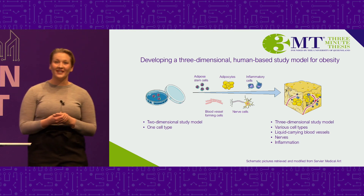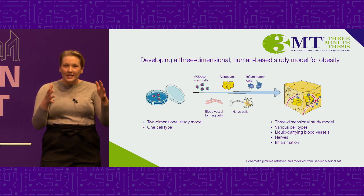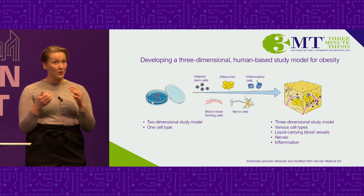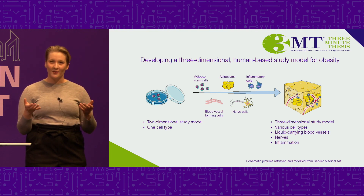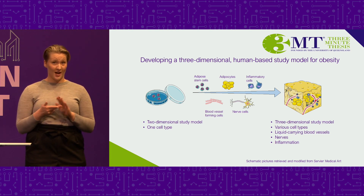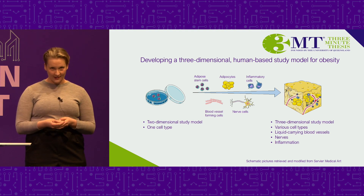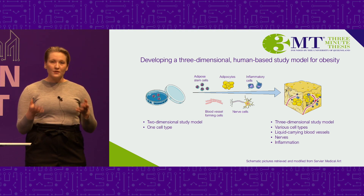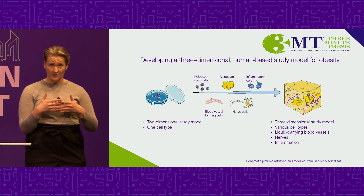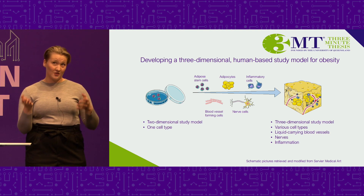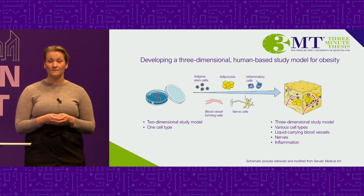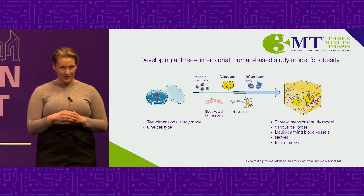And this is exactly what we're doing. We will create a three-dimensional tissue model with various cell types, surround them with tissue-like material, and make them form fat, blood vessels, and nerves. Ultimately, we will recreate that badly functioning fat tissue. With this model we can really understand how the different cell types interact with each other and how inflammation affects the human body. The competition is tough and the field is rapidly growing.